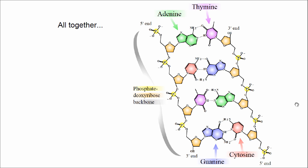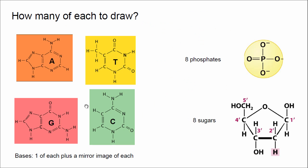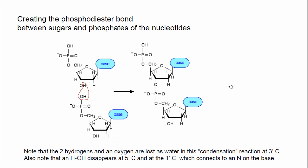Okay, so now we're going to put everything together and show you basically what I'm looking for in this assignment. You're going to need to show me all four pairs and the sugars and the phosphates around them. The sugars and phosphates alternate: sugar, phosphate, sugar, phosphate, sugar, phosphate on each side of the molecule. So how many of each to draw? You'll need one of each of the bases and then a mirror image of each of the bases, eight phosphates and then eight sugars. But the phosphates and sugars don't have to be mirror images. You can draw eight of each of those and they just rotate.